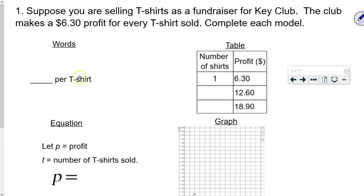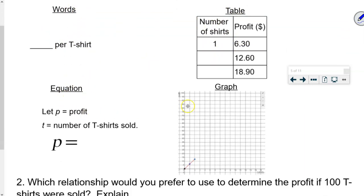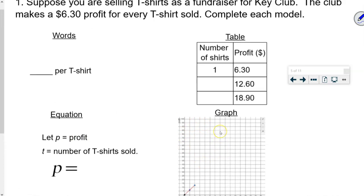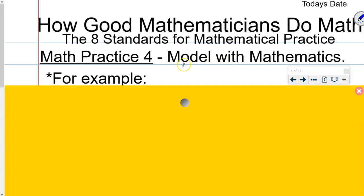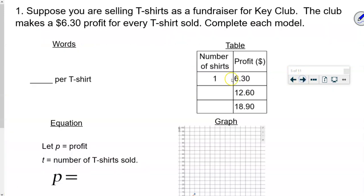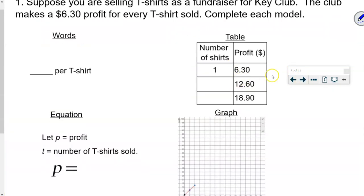And the directions are, complete each model. And then below that, I have a section where it says word. A section where it says table. A section where it says equation. And a section where it says graph. So just based on that information, when I say complete each model and the math practice says model with mathematics, what do you think we're meaning when we say model with mathematics? Just by looking at this example. Complete each model. And the math practice is model with mathematics. Waiting for a few more hands. Let those brains think about this. Turn them on. It says complete each model. And the math practice is model with mathematics. Let's see those hands.